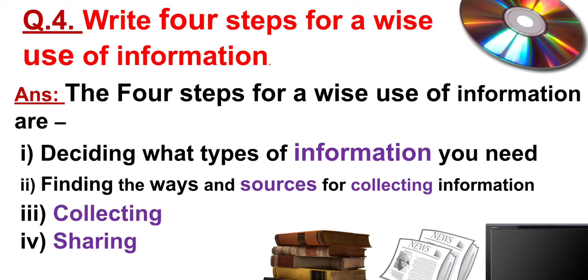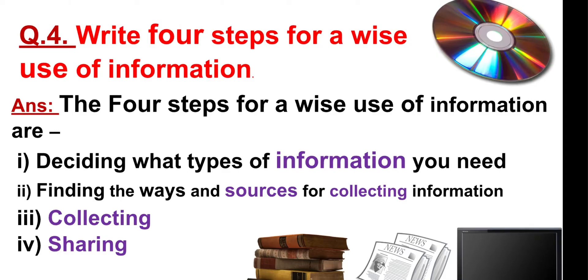The best way to use information involves four steps. Step one: decide what type of information you need — maybe you have a problem with math, science, or English. Step two: find the ways and sources for collecting information — you search, go to the internet, go to a bookshop, buy a book, or go to your teacher.